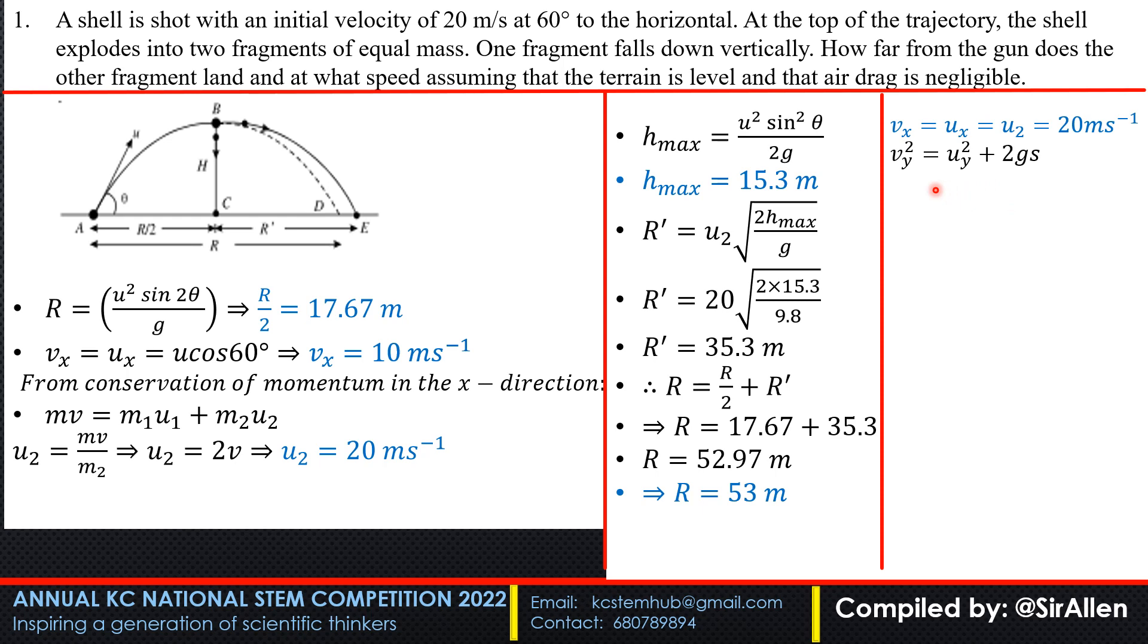To get vy, we use one of the equations of motion in the vertical direction. vy squared equals uy squared plus 2gs. At point B, the particle is traveling horizontally with no initial vertical velocity, so uy is zero. Therefore vy equals square root of 2gs, where s is h, the maximum height of 15.3. We get vy at 17.3 meters per second.